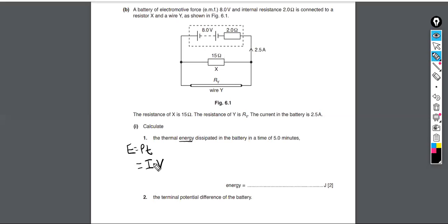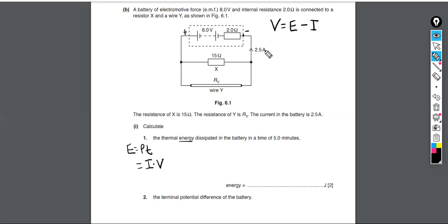Remember the equation: the terminal PD — the potential difference available at the terminals of the battery — equals the EMF minus the lost volts, which equals the current times the internal resistance (lowercase r). So the voltage we need is the lost volts, and we have to calculate that first.